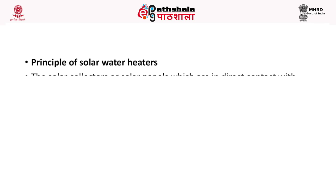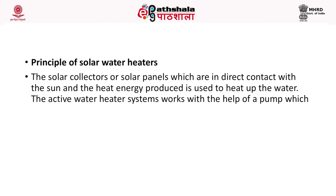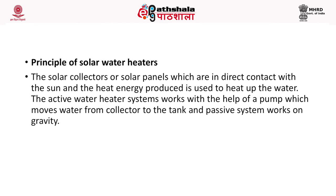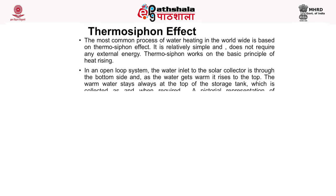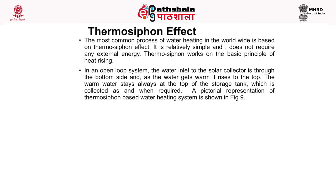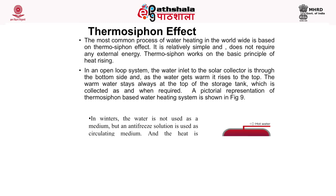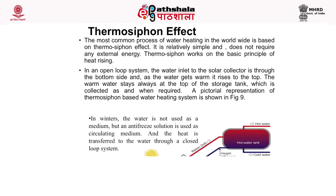The principle of a solar water heater: solar collectors in direct contact with the sun produce heat energy used to heat water. Active systems use a pump to move water from collector to tank; passive systems work on gravity. The most common process is based on the thermosyphon effect — simple and requiring no external energy. In an open loop system, water enters the solar collector from the bottom; as it warms it rises to the top, and warm water is stored at the top of the tank. In winters, an anti-freeze solution is used as the circulating medium and heat is transferred to water through a closed loop system.